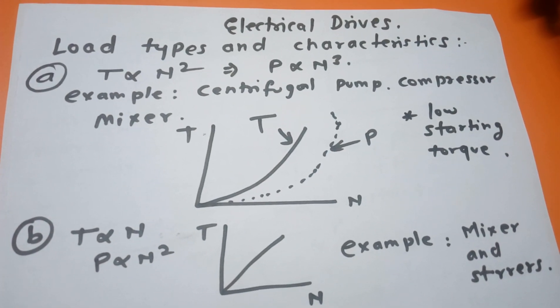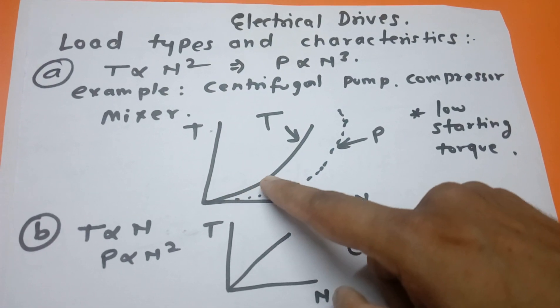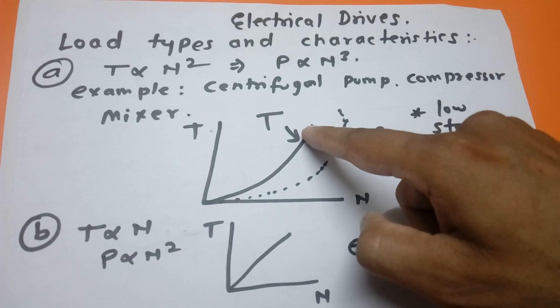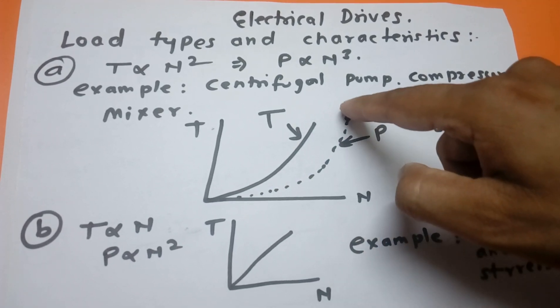Some examples like centrifugal pumps, compressors, and mixers use such type of characteristics. Here we can see the starting torque is very low and after that torque starts to increase very much.